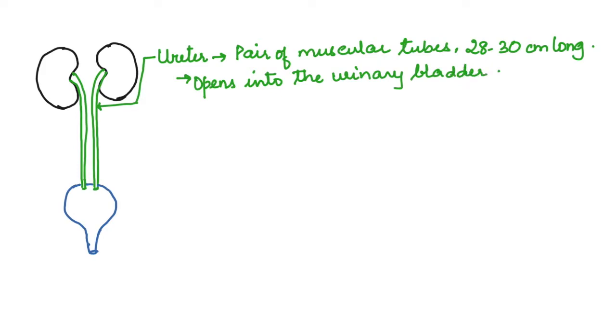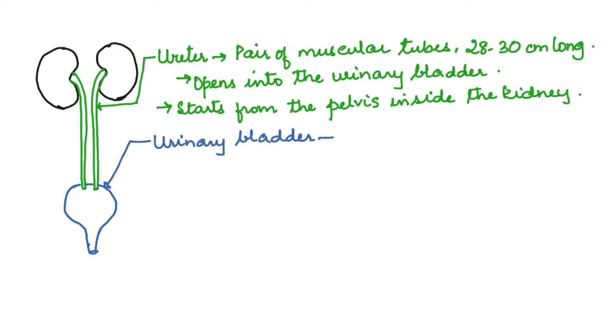It opens into the bladder and begins from the pelvis region inside the kidney. We have seen that in the previous video on internal structure of kidney. The urinary bladder is located in the pelvic cavity and is made up of transitional epithelium.